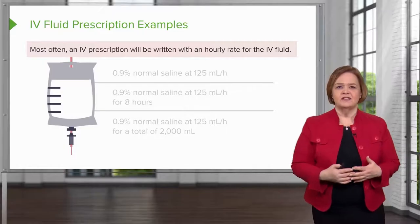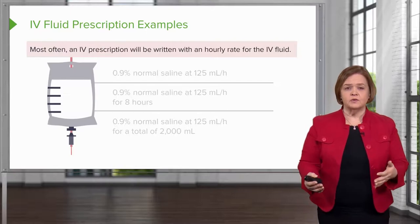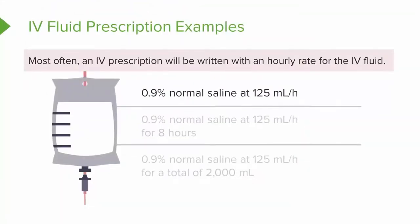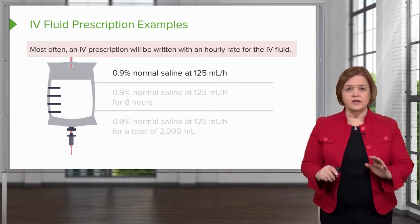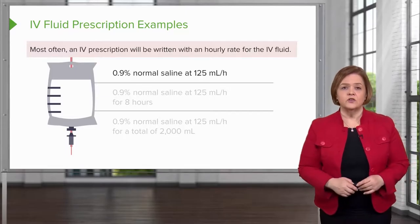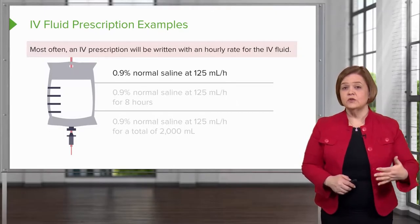Now let's look at some IV fluid order examples. Most often an IV order will be written with an hourly rate for the IV fluid. I'm going to show you three examples of what you might see in a patient's chart. 0.9% normal saline at 125 mils per hour means I'm going to hang a bag of normal saline and I want it to run at 125 mils in an hour — the patient receives 125 milliliters of normal saline every hour. It doesn't give me any type of time limit; it just says start an IV going at 125 an hour. As a responsible nurse, I'm going to keep communicating with the healthcare provider to see how long the patient needs to continue this level of therapy.